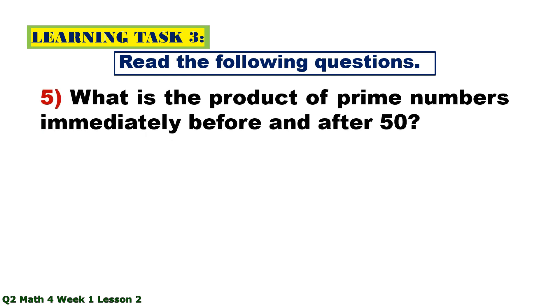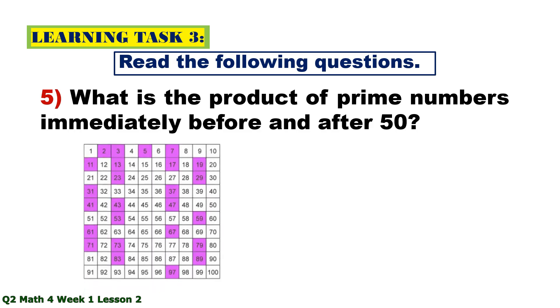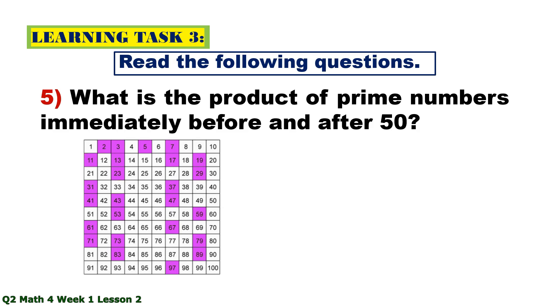Number 5. What is the product of prime numbers immediately before and after 50? 47 and 53. And the product is 2,491.